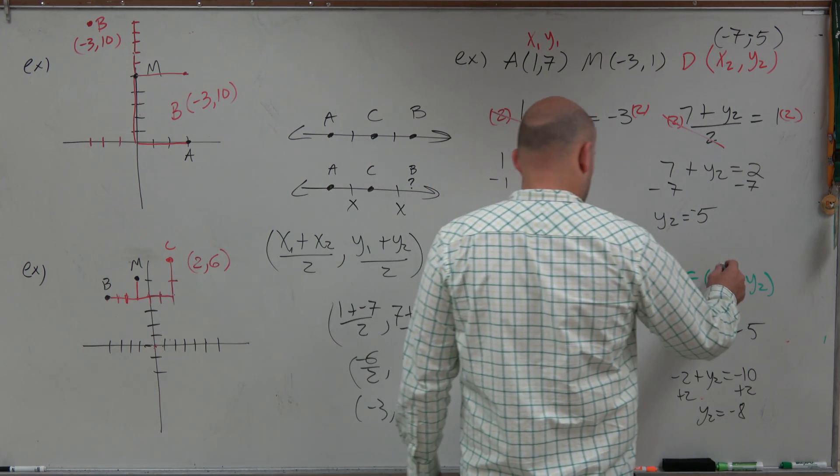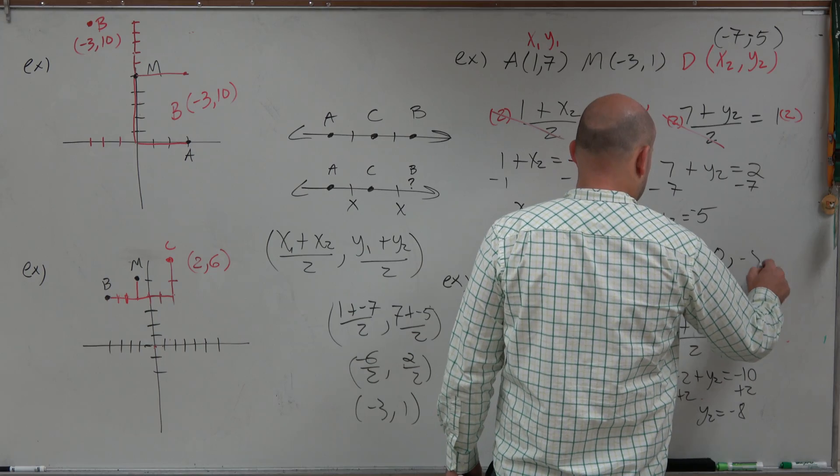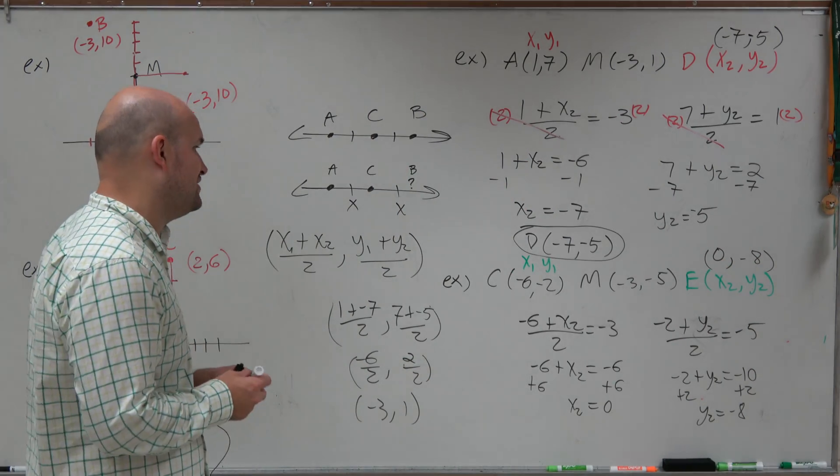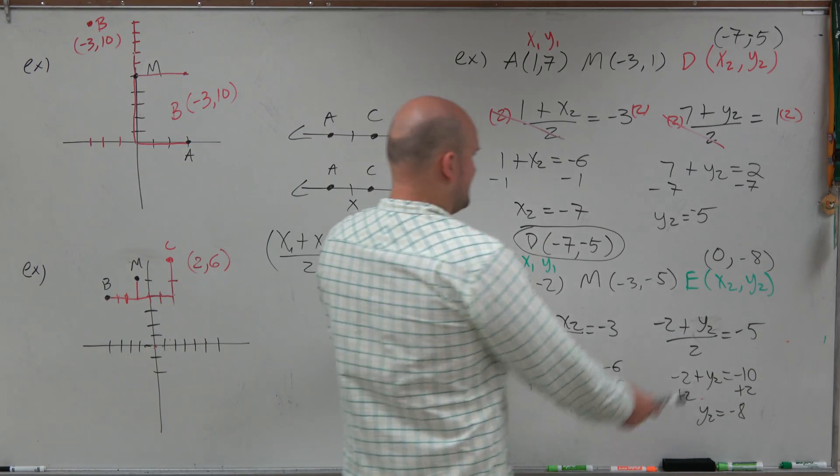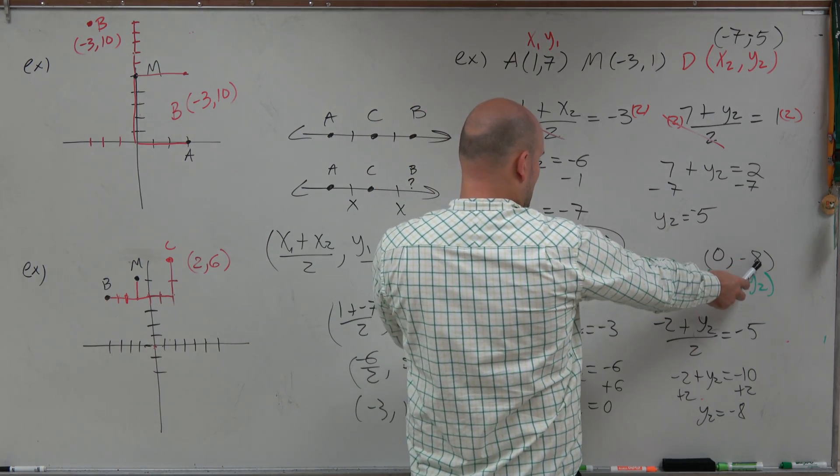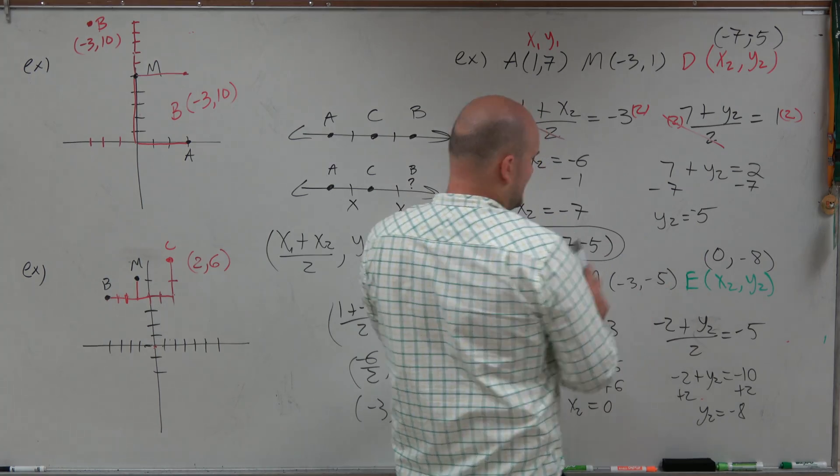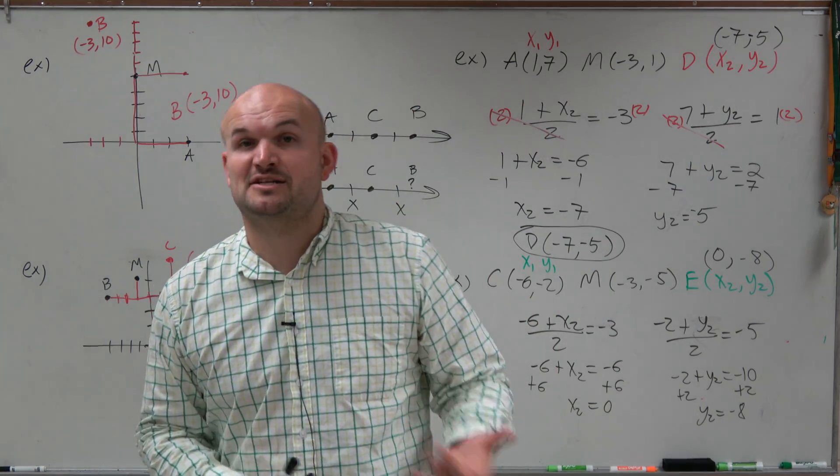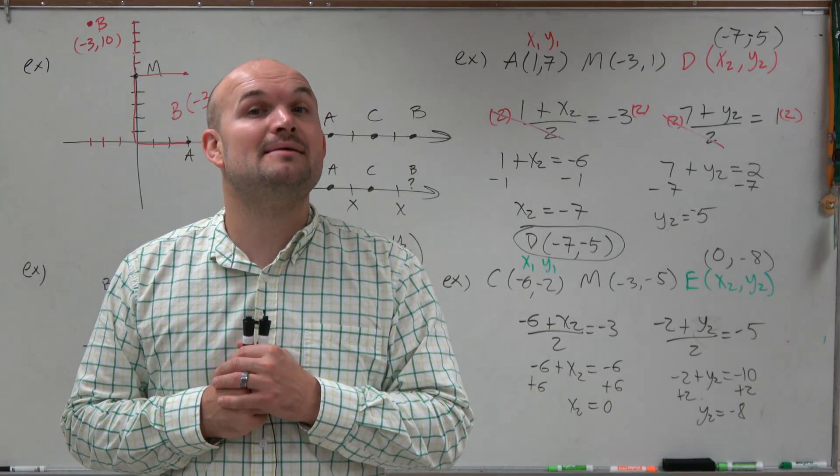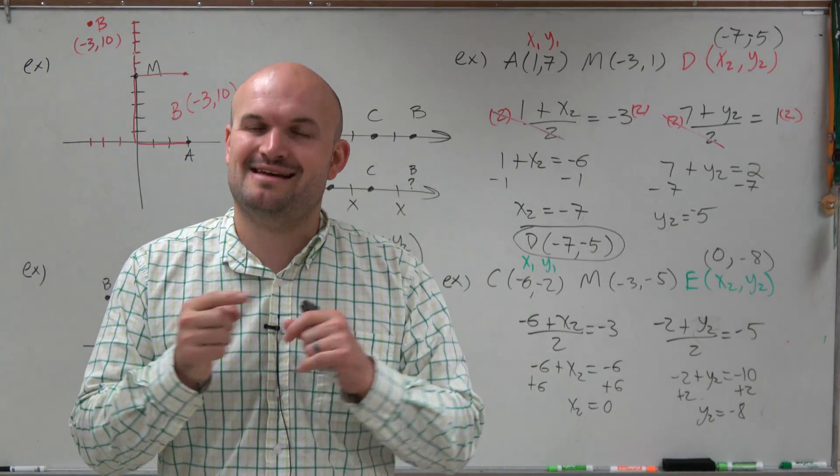And so therefore, my coordinate point is 0, negative 8. Rather than actually plugging everything into the formula, I'm just going to do a mental check. Make sure that negative 6 plus 0 divided by 2 is negative 3. Yes. Negative 2 plus negative 8 is negative 10. Divided by 2 is negative 5. So very good. So you can plug it back into the equation, or you can do a mental check. But there you go, ladies and gentlemen. That is how you find the endpoint when given the other endpoint and midpoint. Thanks.